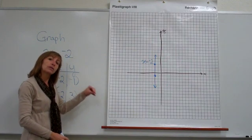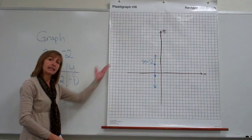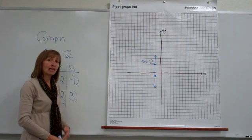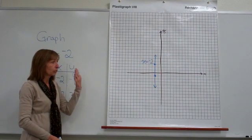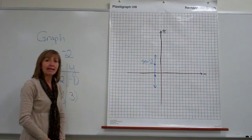So x equals a number, when you're graphing that in the xy plane, will be a vertical line that goes through the x-axis at that x value. Thank you.